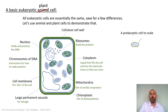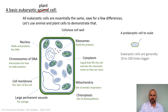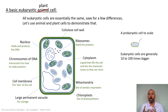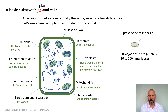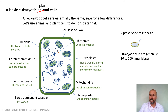Just for contrast, let's throw up a prokaryotic cell so you've got it there for scale — to see roughly how they correlate to each other. Prokaryotic cells are much, much smaller than eukaryotic cells: 10 to 100 times smaller. So eukaryotic cells are 10 to 100 times bigger. That's pretty much the detail I would expect you to know from GCSE.